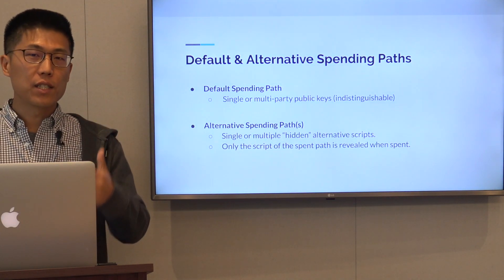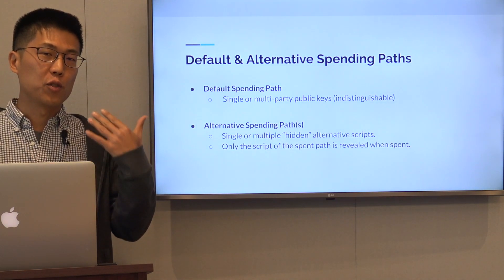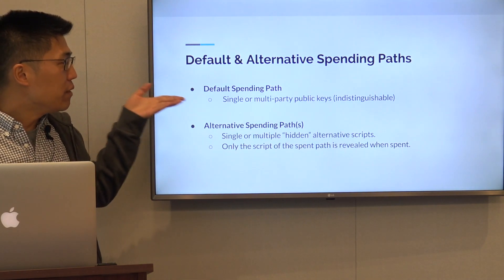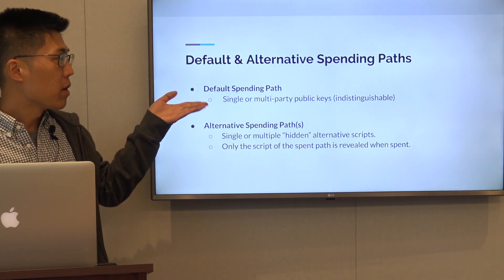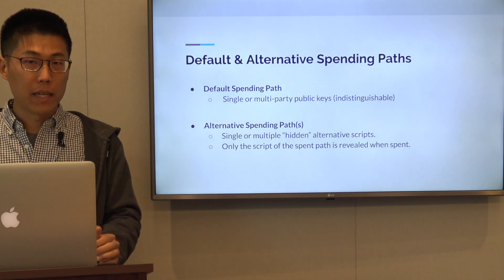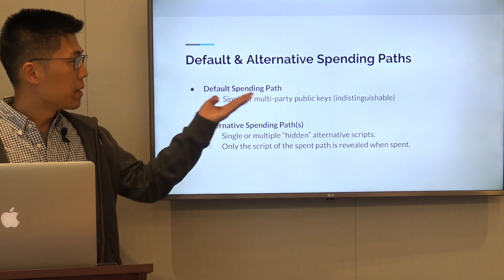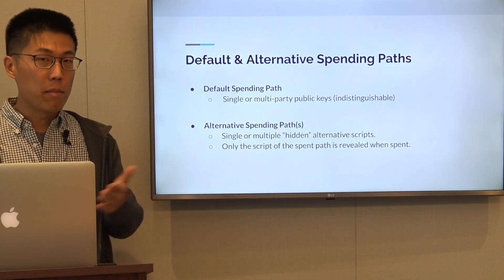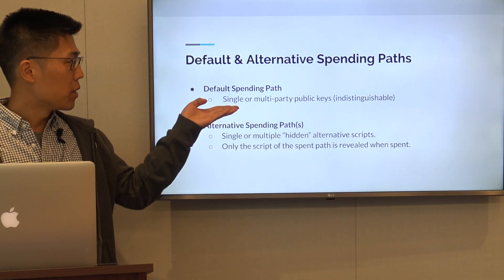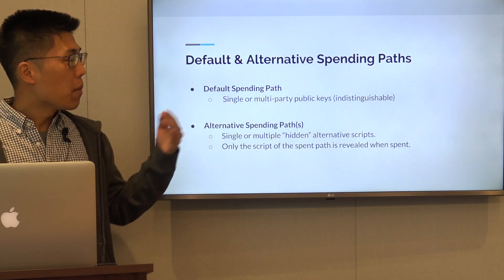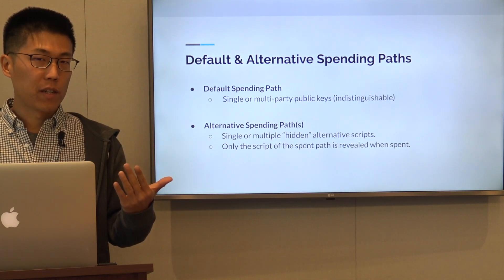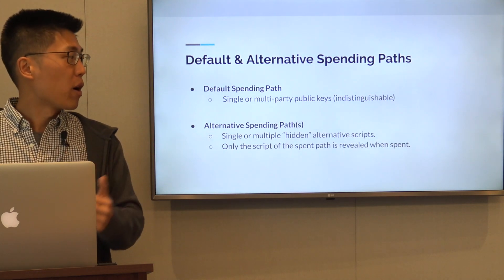For one, it provides different ways of spending an output. We have a default spending path, which is basically a single or multi-party public key. This public key can be aggregated in a multi-party case or just have a single owner, but these two are indistinguishable from an on-chain perspective — so that's a huge privacy win.